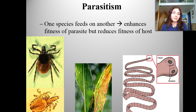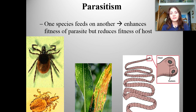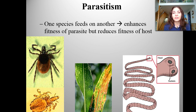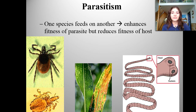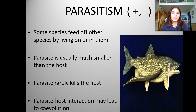Parasitism is probably the type of symbiosis most of you have heard of. This is when one species feeds on another — it enhances the fitness of the parasite and reduces the fitness of the host. In the case of a tick on a dog, the tick would be the parasite and the dog would be the host. Another common example would be tapeworms — sometimes humans get tapeworms if we consume tainted food, and the tapeworm will live in our intestines, hook on, and uptake our nutrients.